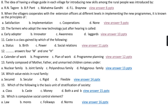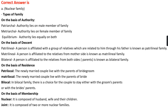Question number thirteen: Family composed of mother, father, and unmarried children comes under option A, nuclear family; option B, joint family; option C, polyandrous family; option D, polygynous family. The right answer is option A, that is nuclear family. On the basis of authority, families are of three types: patriarchal families, where authority lies on the male member; matriarchal families, where authority lies on the female member; and equilibrium families, where authority lies equally on both.